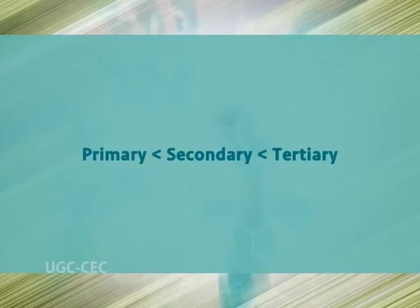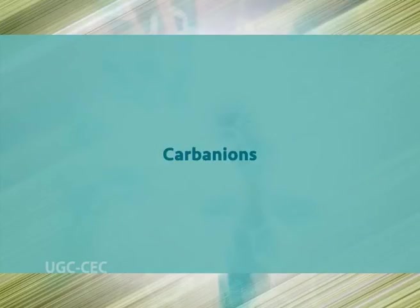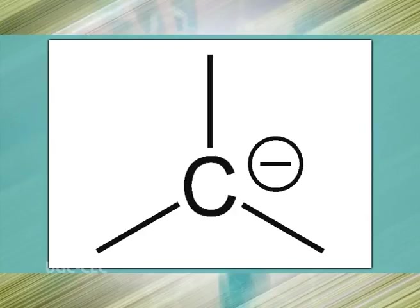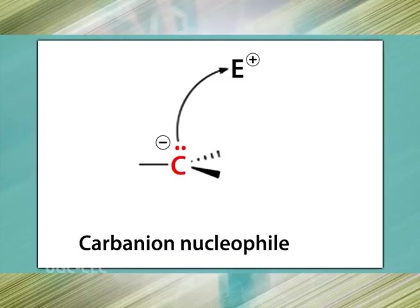The order of stability of carbocations is: primary < secondary < tertiary. A carbanion is an anion in which carbon has an unshared pair of electrons and bears a negative charge. The carbanion exists in a trigonal pyramidal geometry. Formally, a carbanion is the conjugate base of a carbon acid, and it is a nucleophile.